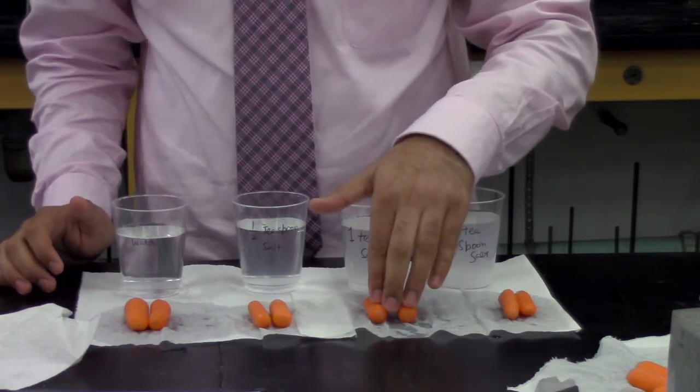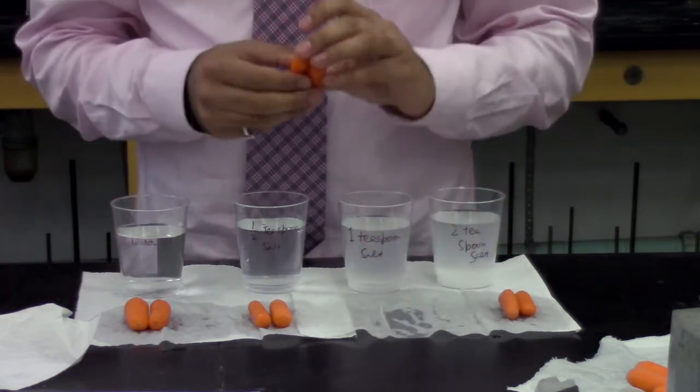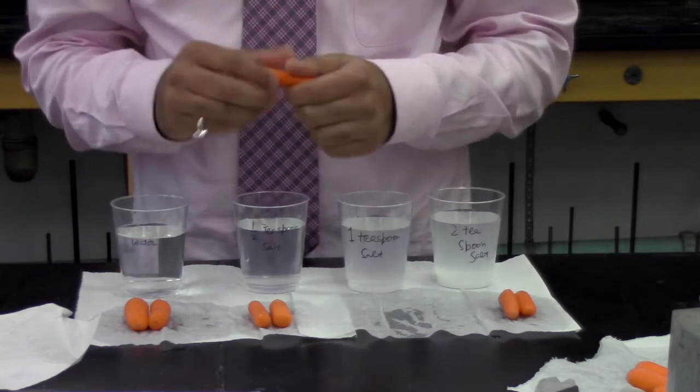Now I'll compare this carrot to the carrots in the third cup which had one teaspoon of salt. The carrot from third cup is squishy and has shrunk.